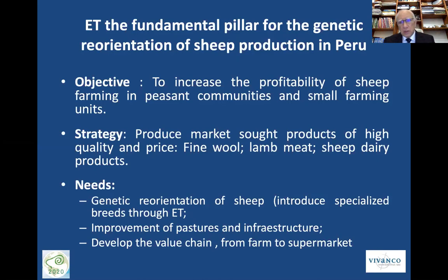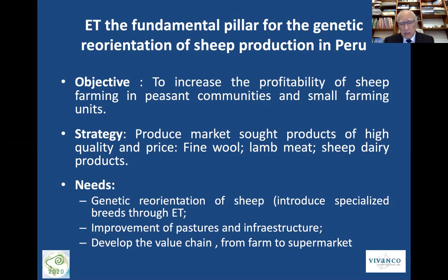In Peru, where I have been working for 10 years, embryo transfer was the pillar of all the genetic reorientation being done in this country. The objective is to increase the profitability of farming in peasant communities and small units. The strategy is that they should produce products that are very valuable in the market, like fine wool, lamb meat and sheep dairy products. For this, there was a need of genetics for the reorientation of the flocks to specialized breeds, and of course the parallel improvement of pastures, infrastructure, and the development of the value chain from the farm up to the supermarkets.